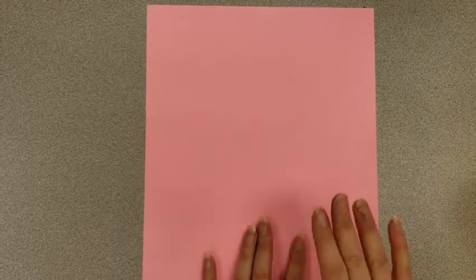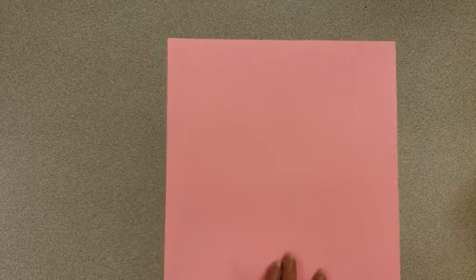So each of you is going to choose whatever color paper you would like to start your dot on and then each of your tables has a little container full of circles.